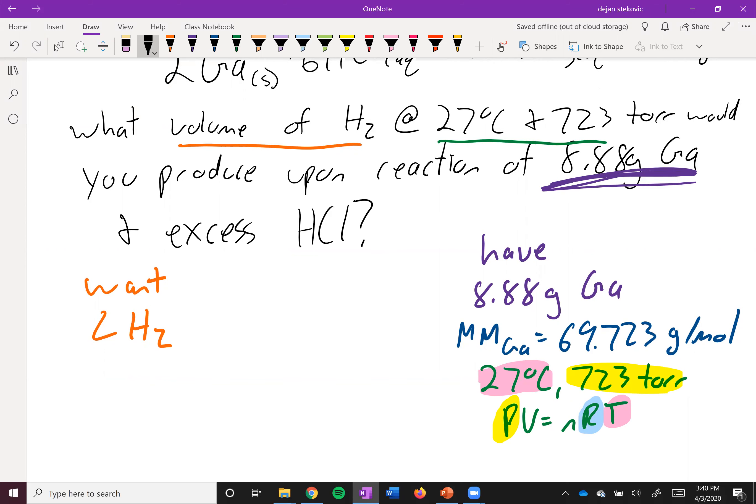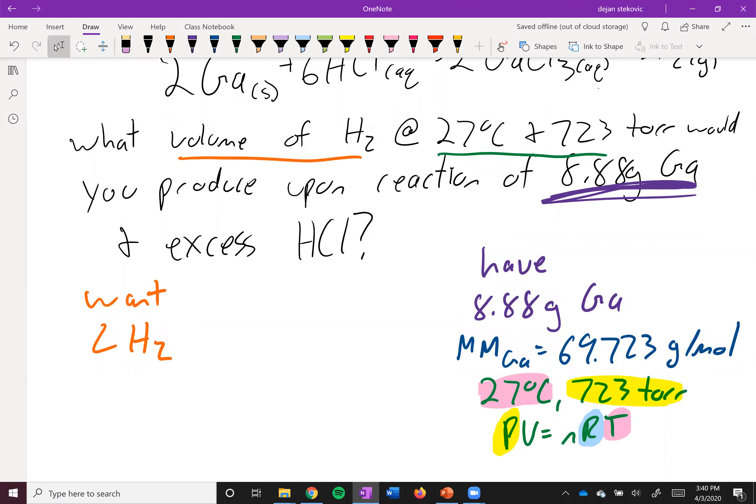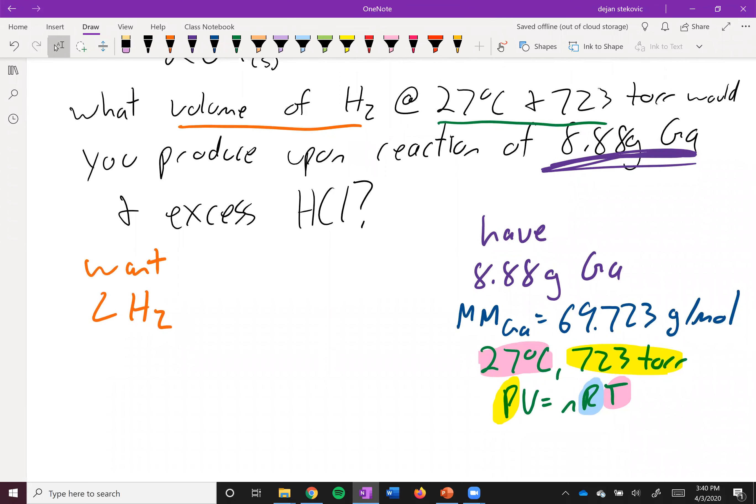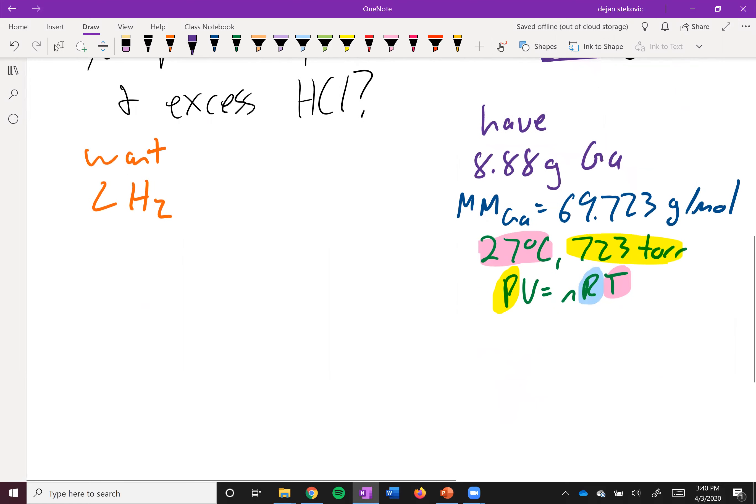Well, N, maybe we could figure out N. We have grams. We've got molar mass. We've got some stuff going on there. So we could figure out N. So let's go ahead and start going at this. So the first thing we always want to start off with is with the thing that's not a conversion factor. So currently that's our 8.88 grams of gallium.